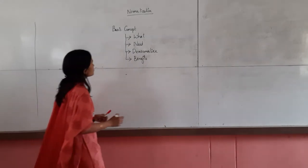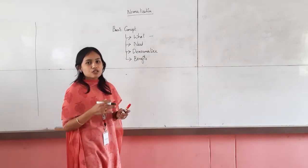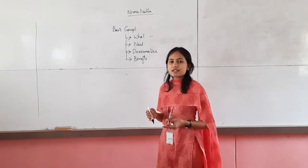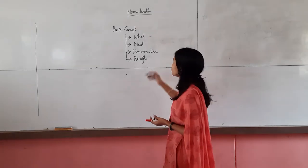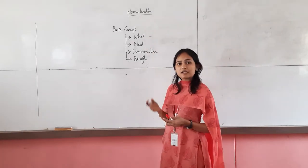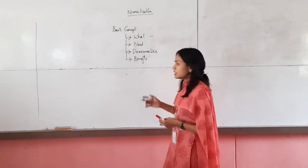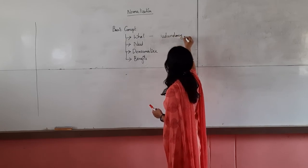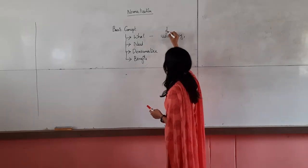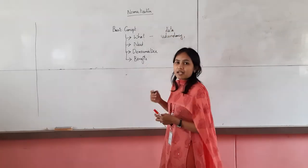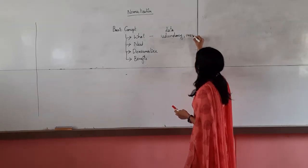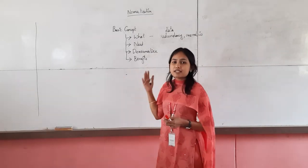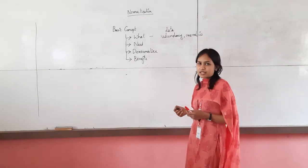First I will introduce the definition of normalization. Normalization is nothing but designing a relational schema — a table, a database, or simply a schema — to eliminate redundancy. Here we are talking about data redundancy, and along with that we need to eliminate some anomalies. Without explaining what data redundancy and anomalies are, we can't explain the normalization concept.